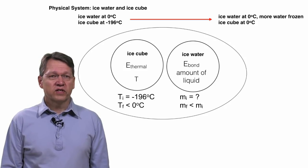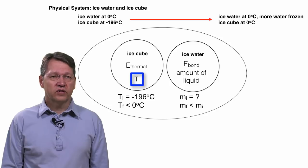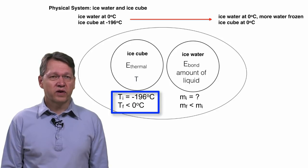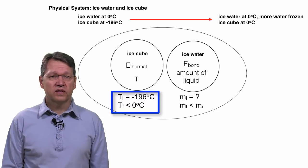The indicator for thermal energy is temperature, and we know that the initial temperature of the ice cube was minus 196 degrees Celsius, while its final temperature was zero degrees Celsius.